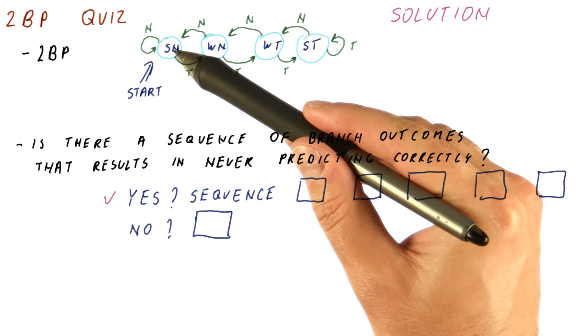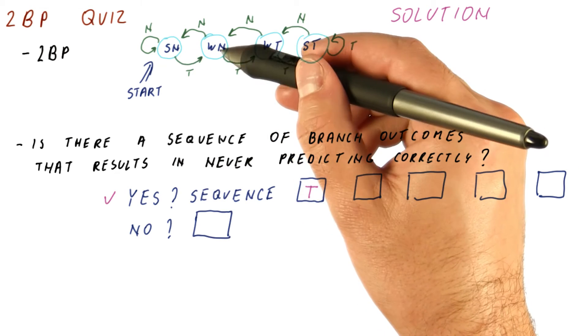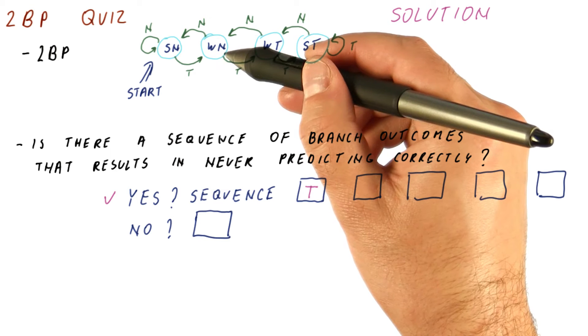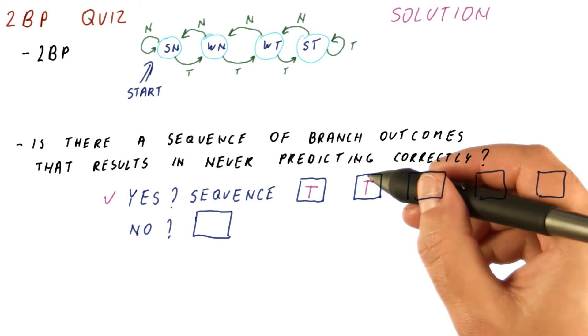So we start in the strong not taken state, thus the first decision would be taken. That would take us to a weak not taken state. The predictor would still predict not taken, so we make the branch be taken next time.